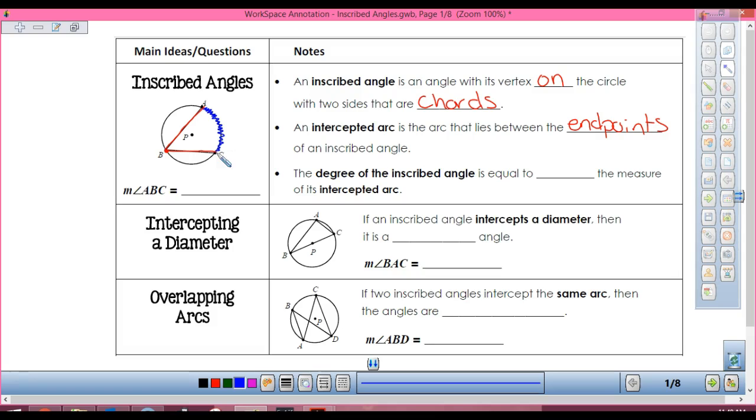The degree of the inscribed angle is equal to half the measure of the intercepted arc. So ABC is going to be one half the measure of arc AC.